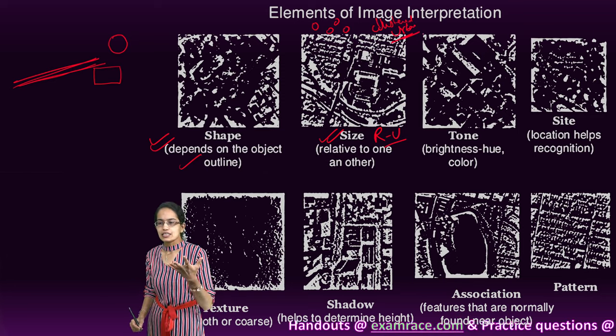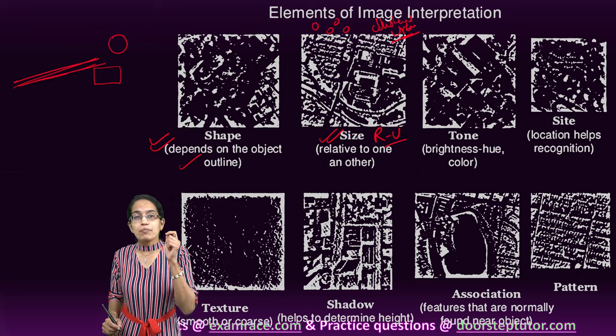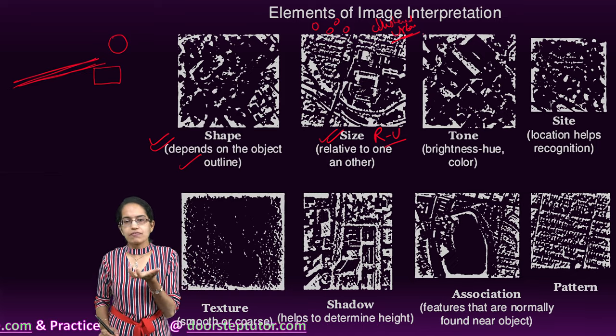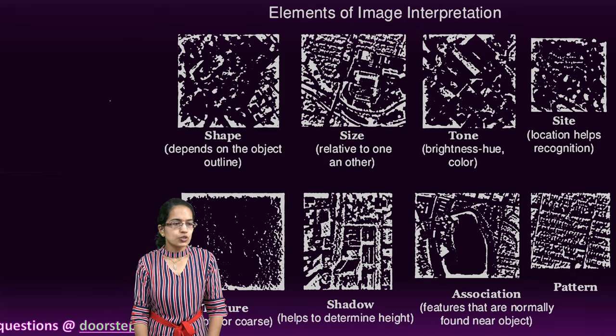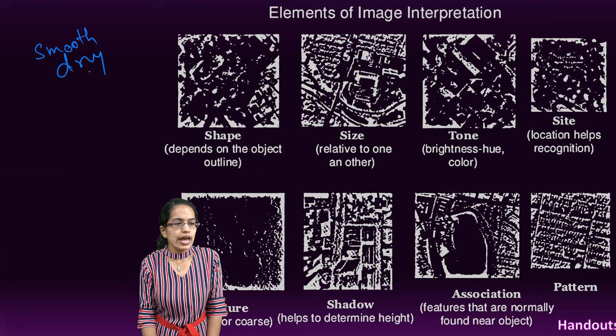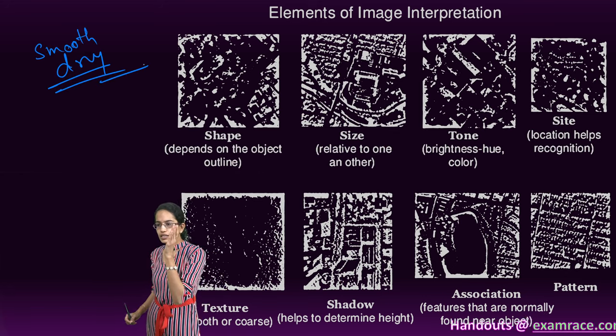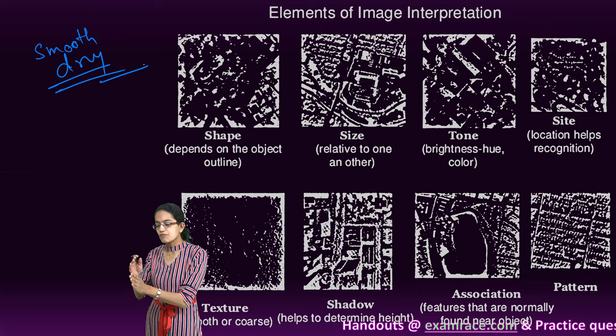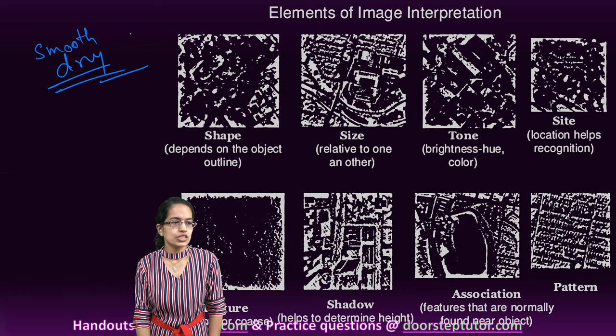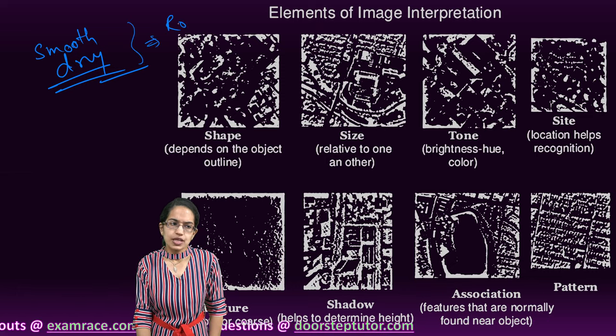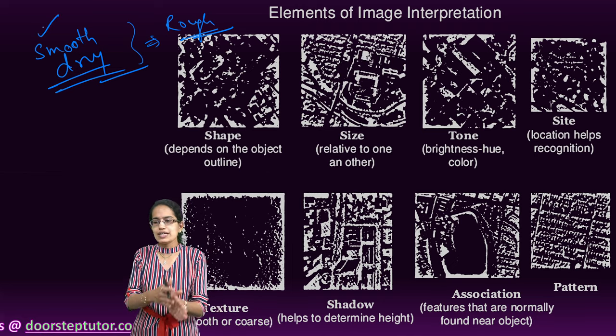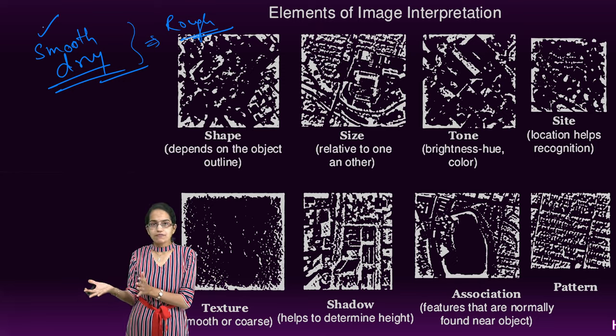The next is the tone. Tone actually explains the brightness or the color. How smooth or what kind of surface is there explains the tone. When I say if the surface is smooth, if the surface is dry, in that case, the amount of energy that would be reflected would be much more in comparison to a rough surface. The amount of energy reflected from a smooth surface would be much higher as compared to a rough surface.